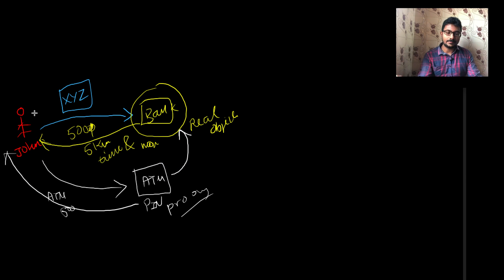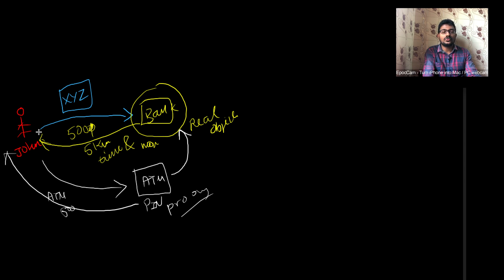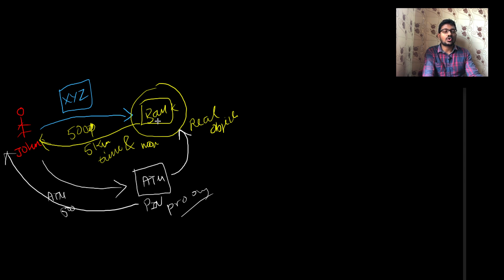Now let's relate this to a real-life example. Consider a person named John who wants to withdraw 500 rupees from his account at XYZ bank. He has two options. The first approach is visiting the bank: he fills a withdrawal challan, submits it to the cashier, the cashier checks credentials like account number validity and sufficient funds, and then returns 500 rupees to John.